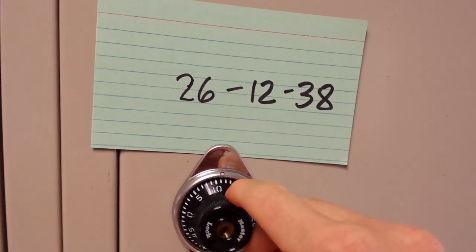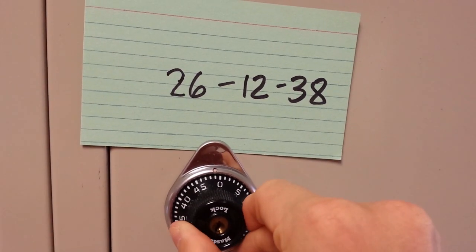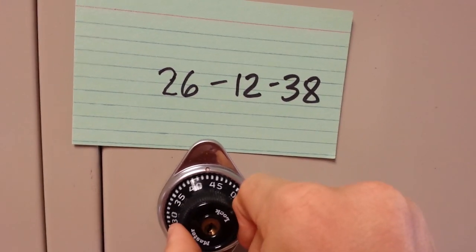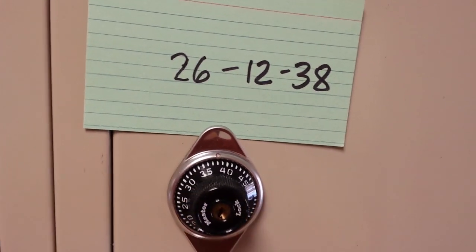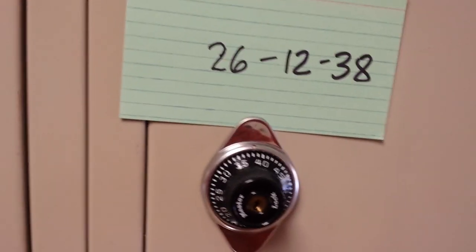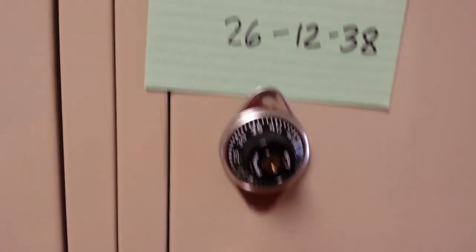And then the last number, I'm going to turn to the right to number 38 and I'm not going to pass this one. I'm just going to go straight to it. Slowly, 38. It's okay to go slow just to make sure that you got it. And you open it up by lifting the latch and there you go.